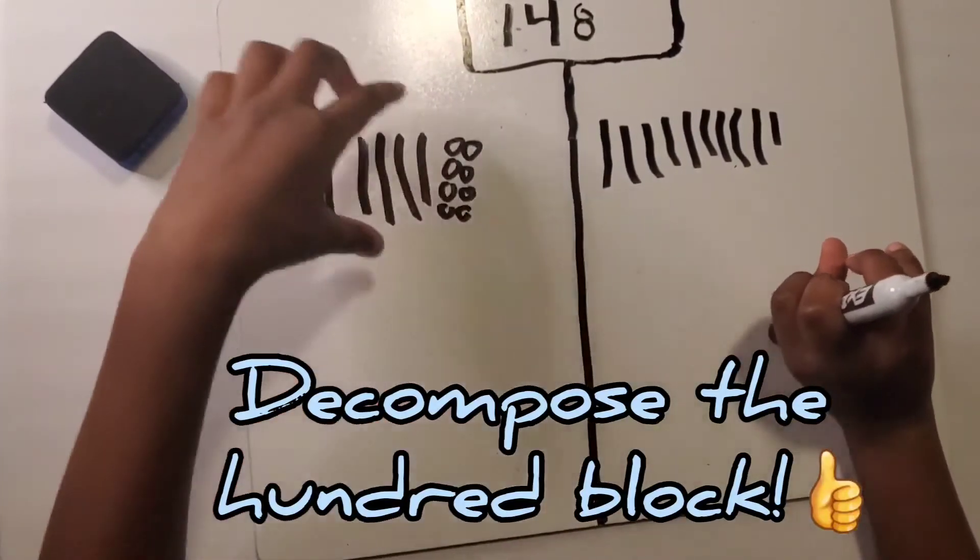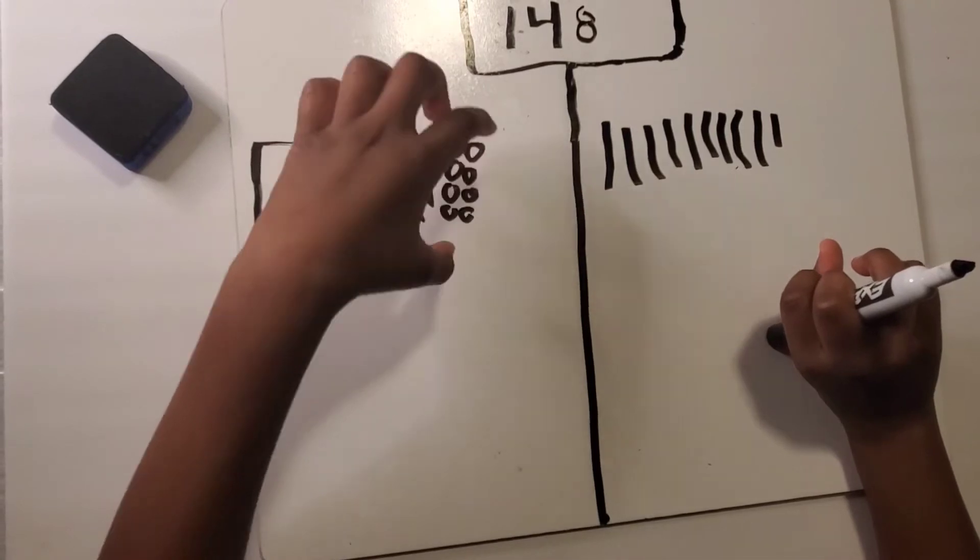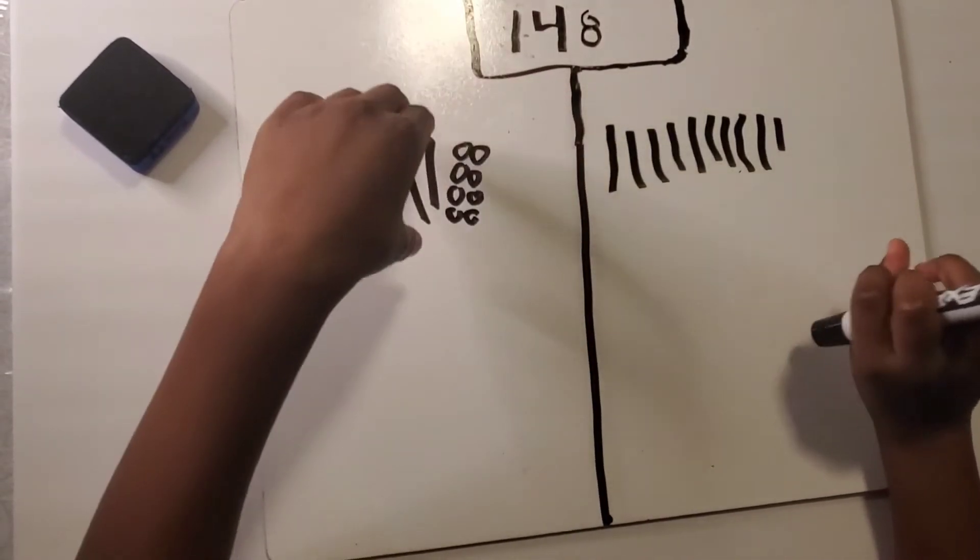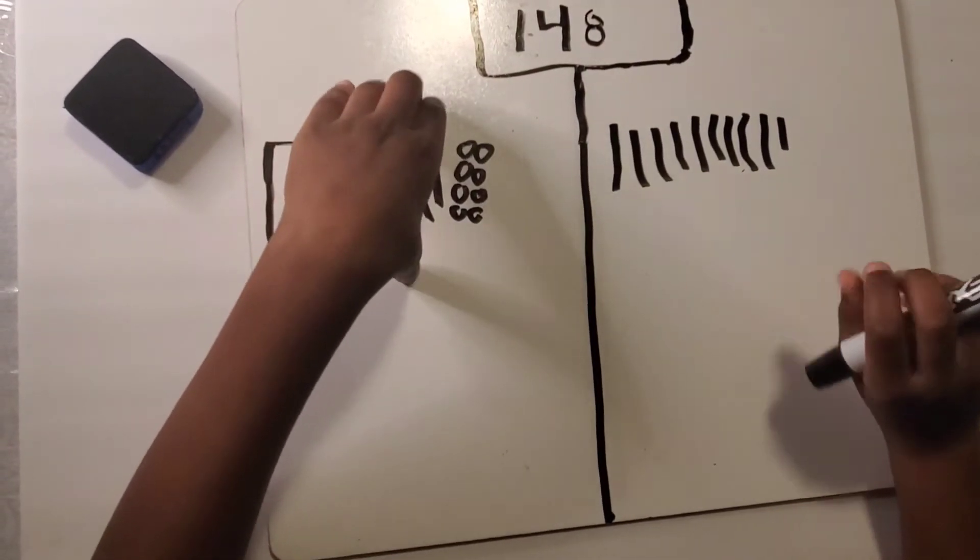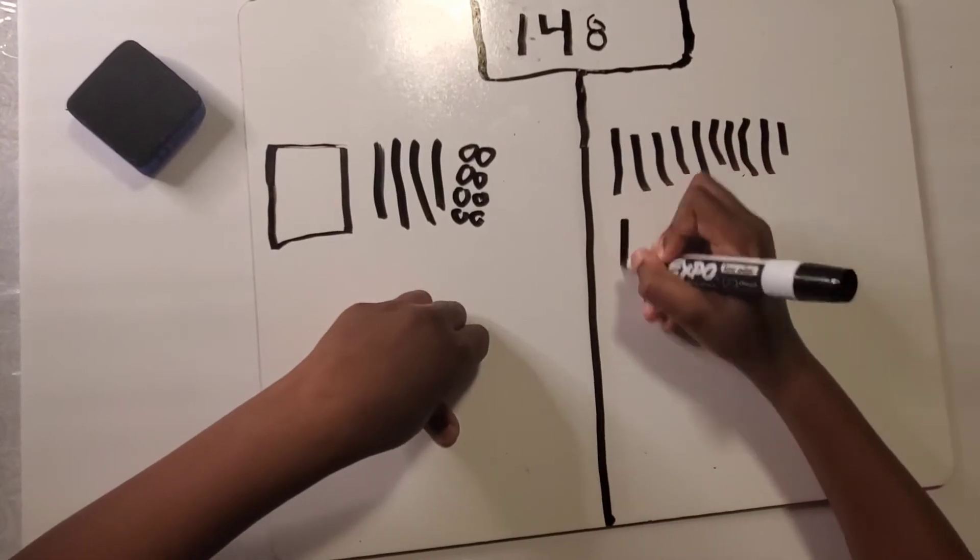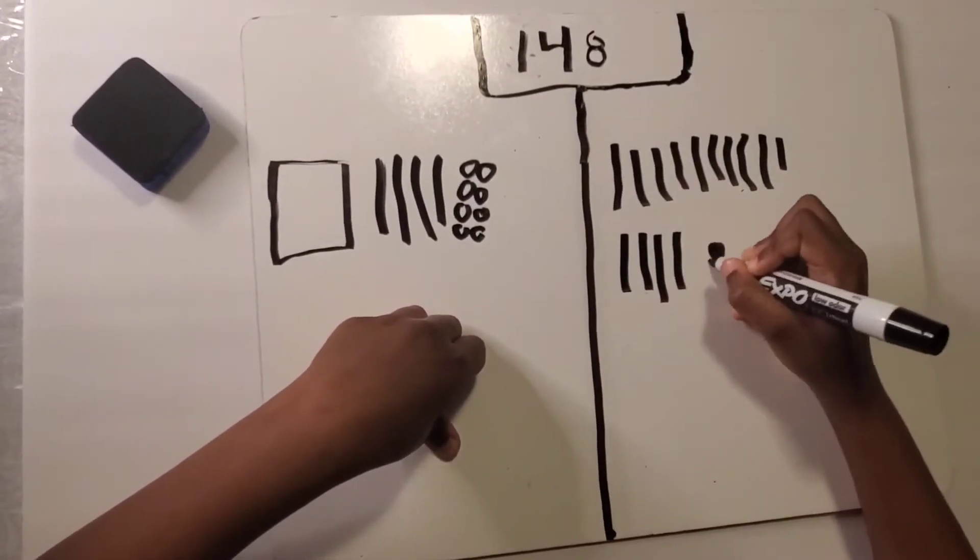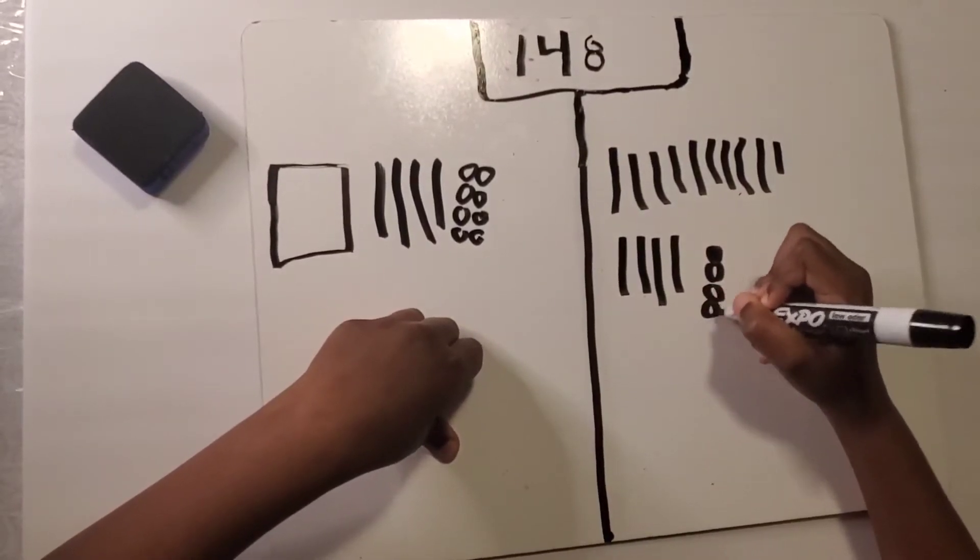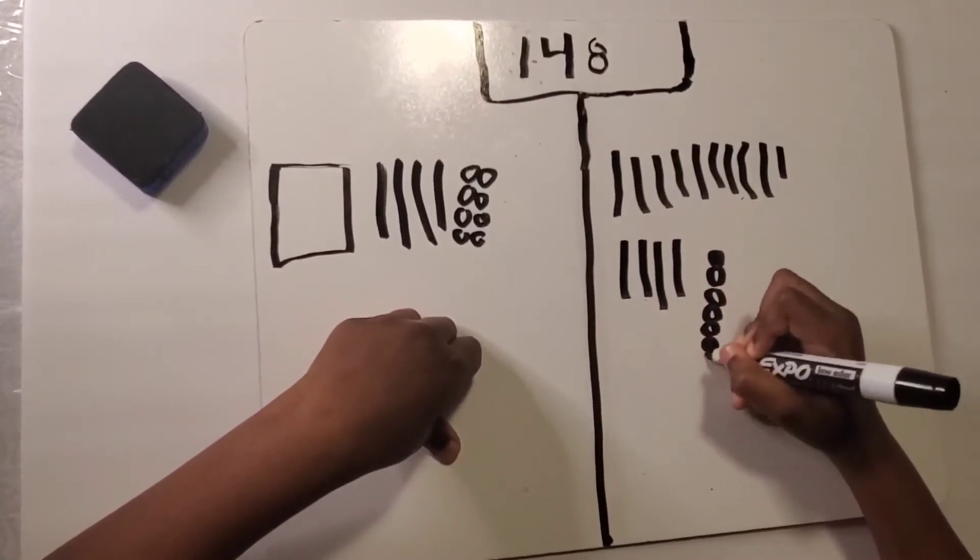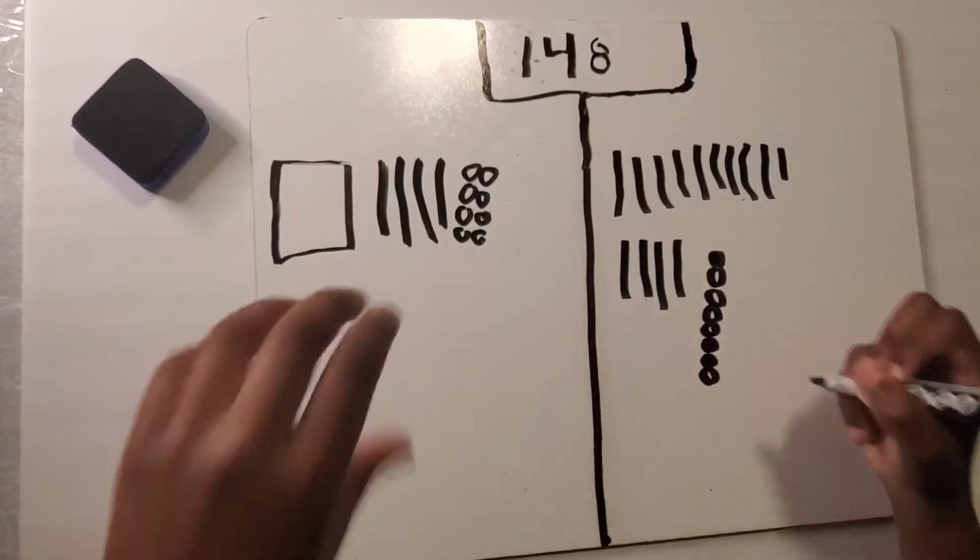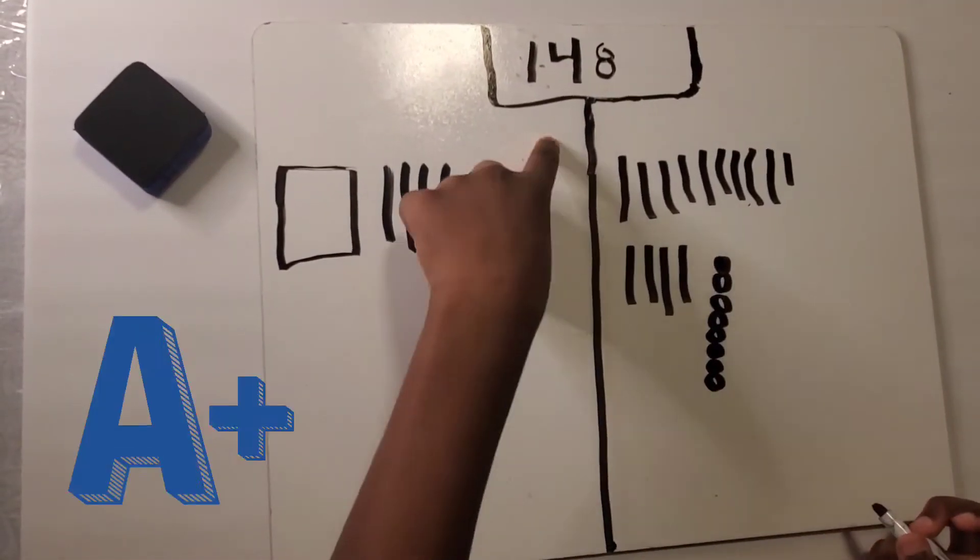So now we're going to do it normal. So all of the eight ones is going to stay the same. The four tens, it's going to stay the same. So that's two ways to decompose a hundred and forty eight.